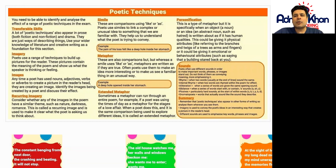Simile: These are comparisons using the words 'like' and 'as.' Poets use similes to link a complex or unusual idea to something that we are familiar with. They help us to understand what the poet is trying to convey. For example, 'the pain of his loss felt like a deep hole inside her stomach.' The pain is being compared to a deep hole in the stomach using those two keywords: 'like' and 'as.'